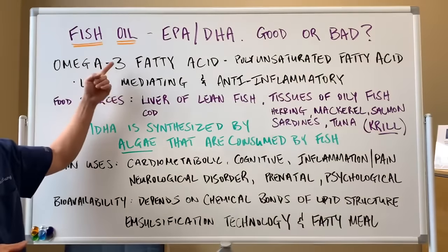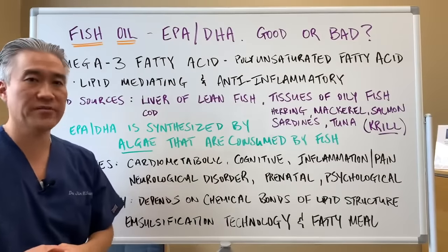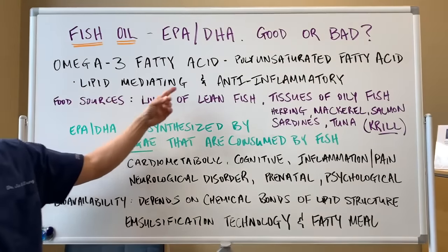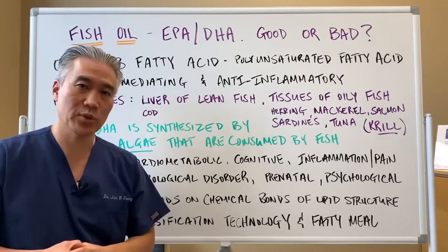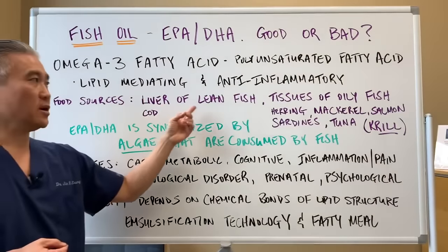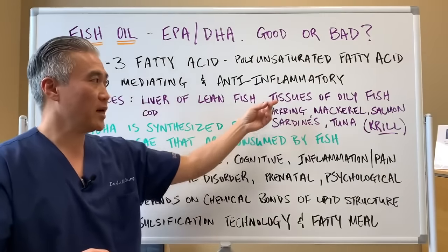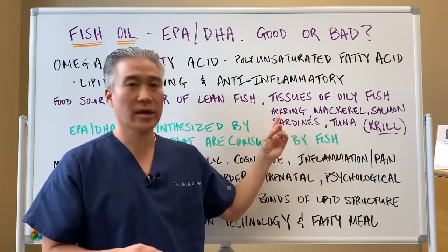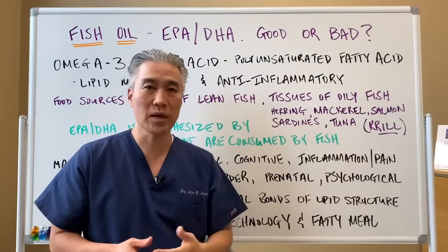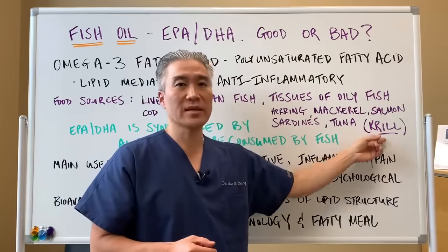When we think about fish oil, it's omega-3 fatty acids. It's a polyunsaturated fatty acid and it's important for lipid mediating as well as being anti-inflammatory. Food sources include the liver of lean fish, particularly cod, or the tissues of oily fish like herring, mackerel, salmon, sardines, tuna, and more recently krill oil.